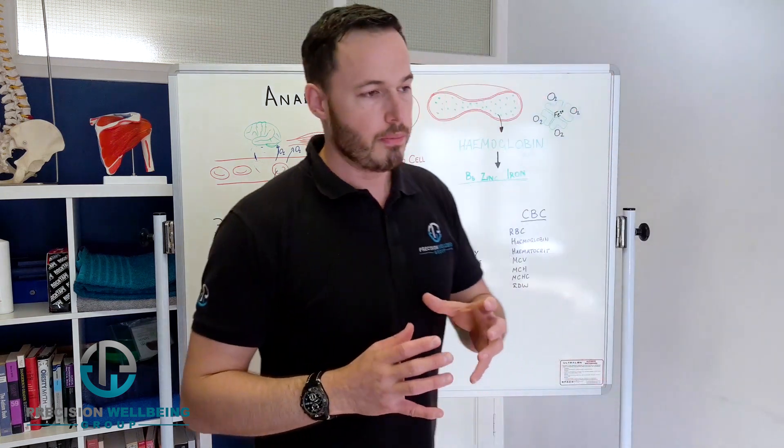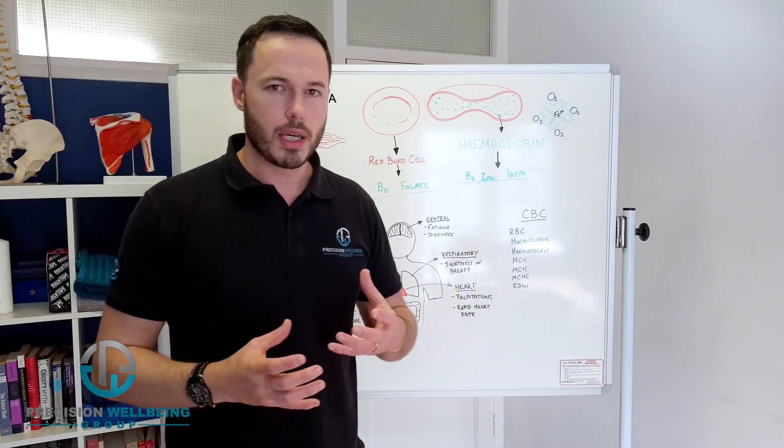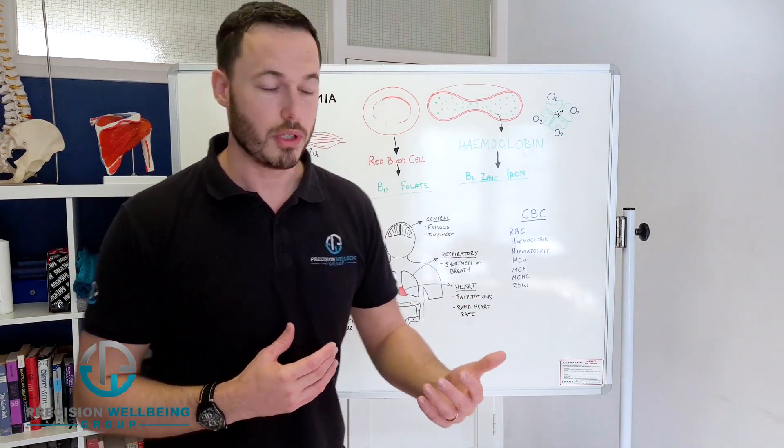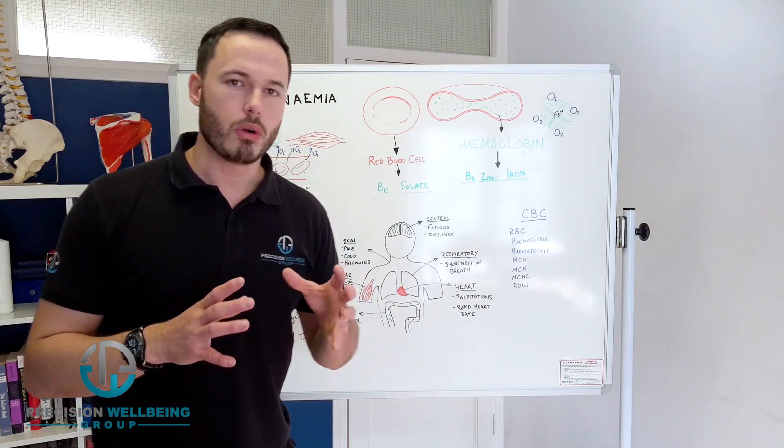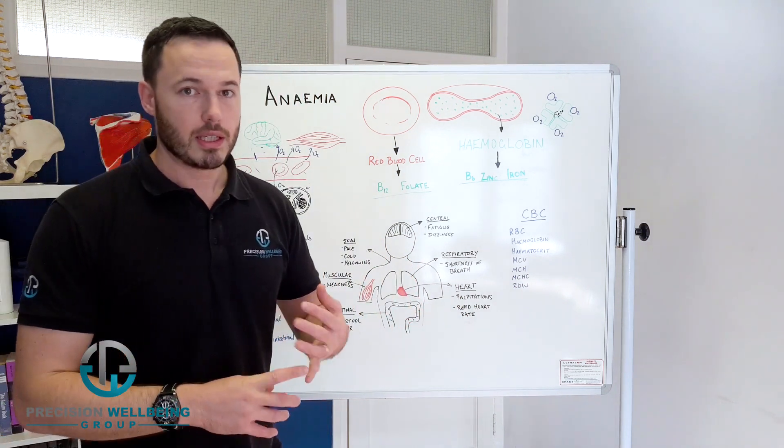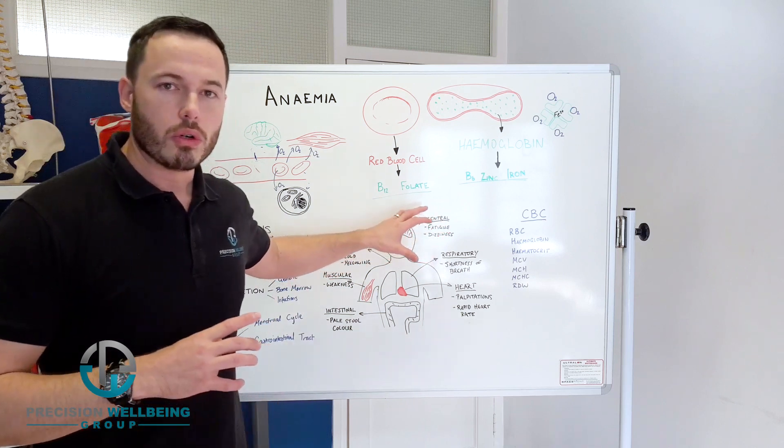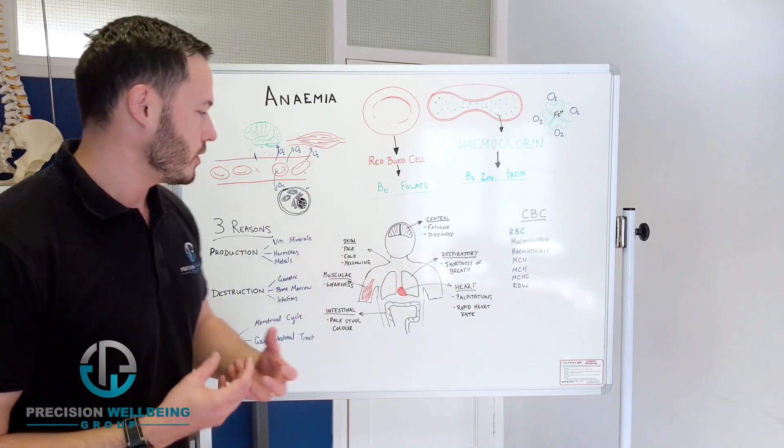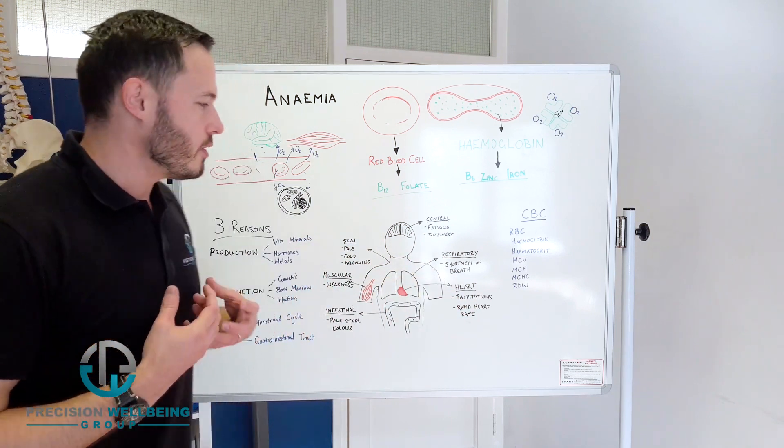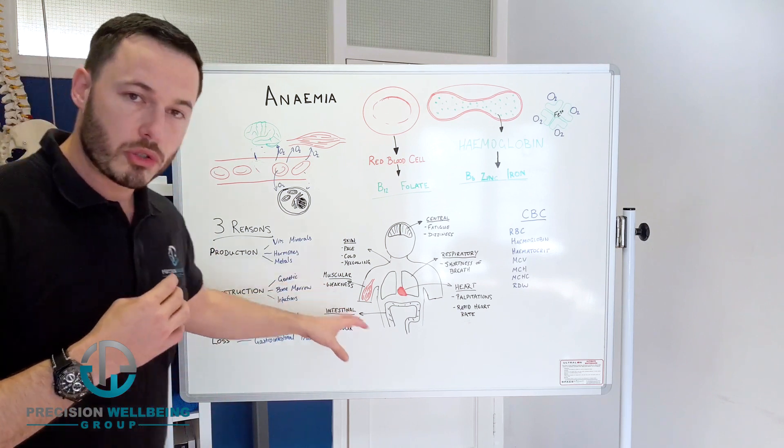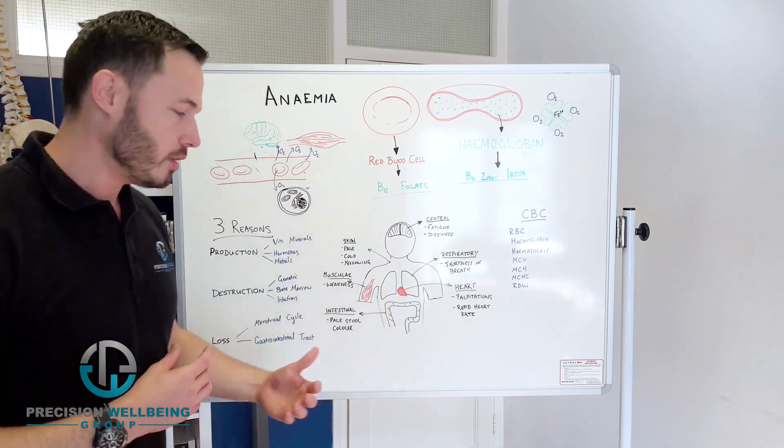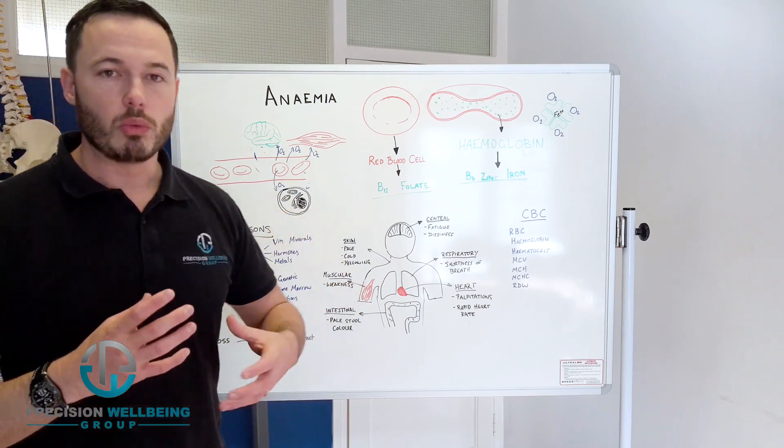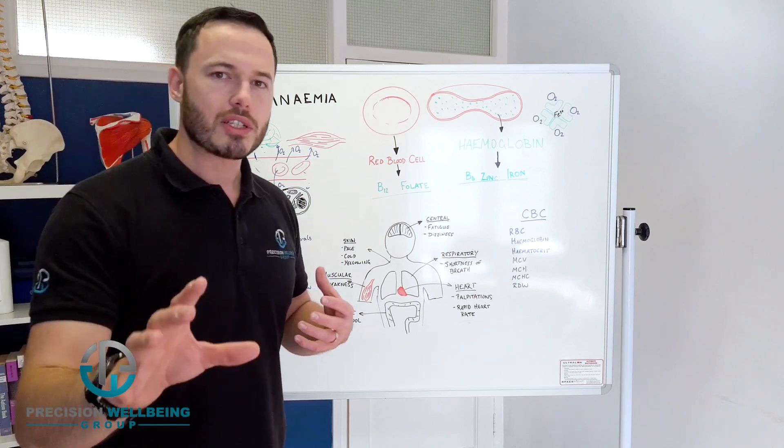Now with anemia, some of the symptoms can be quite generic - they can appear in many diseases or many health conditions - but essentially what we might present with is chronic fatigue, dizziness or we might have a slight shortness of breath, our heart might be going a bit faster, we feel like we've got palpitations going through the chest, our stools will be paler in color, we'll just feel weak and generally tired, and our skin will be pale and cold and potentially yellowing.